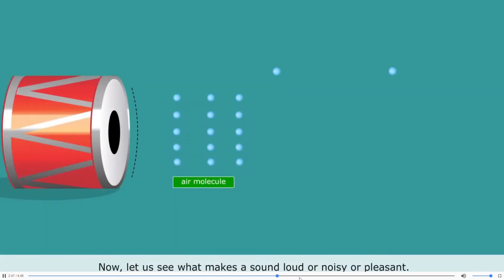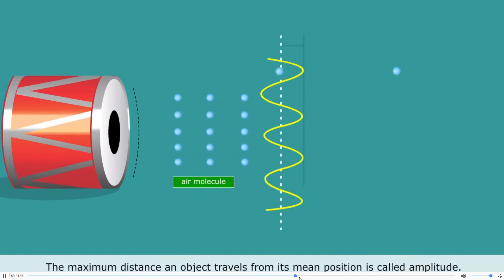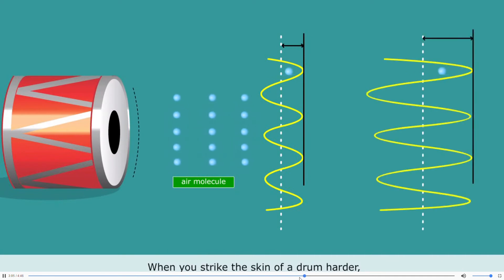Now, let us see what makes a sound loud or noisy or pleasant. The vibrations or oscillations have certain characteristics. The maximum distance an object travels from its mean position is called amplitude. When you strike the skin of a drum harder, the more the distance the skin moves about the mean position. The sound is loud and travels a longer distance. Thus, the more the amplitude of vibration, the louder is the sound.